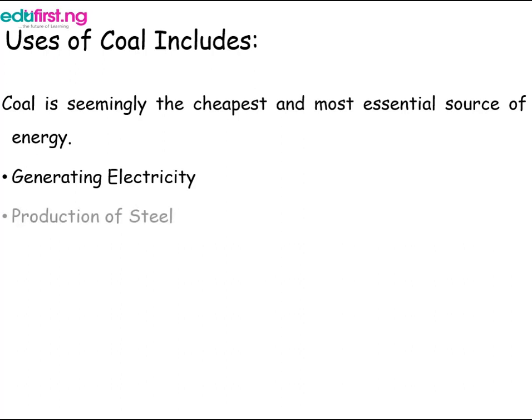We also have coal used in the production of steel, where it is used indirectly. The coal is built into furnaces to form coal coke. Once formed, the manufacturer uses this coal coke to smelt iron in processes that make steel. Ammonia gas is given off, recovered, and used to manufacture nitric acid.